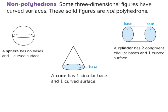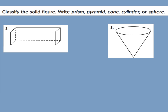Some real-world examples of a cylinder would be a can of soda, a garbage can, or a can of soup. Now let's take a look in our GoMath book at questions two and three. You need to classify your solid figure — write if it's a prism, pyramid, cone, cylinder, or sphere. If you want to get fancy, I don't mind if you give the first name and last name of it.